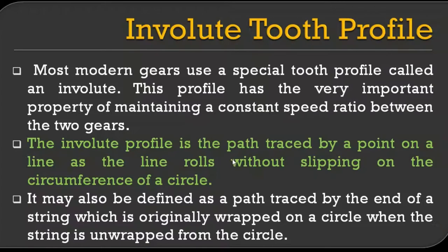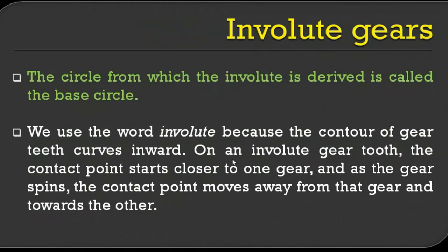The involute may also be defined as the path traced by the end of a string which is originally wrapped on a circle, when the string is unwrapped from the circle. Instead of taking a straight line, you take a string, wire, or thread, wound around the circumference of a circle, then draw the path of the last point of the thread. During winding, you get the involute close to the circle; during unwinding, you get the involute away from the circumference. The circle from which the involute is derived is called the base circle.